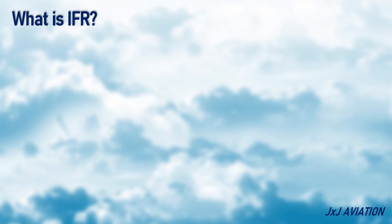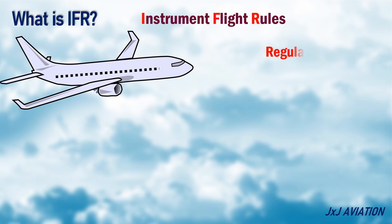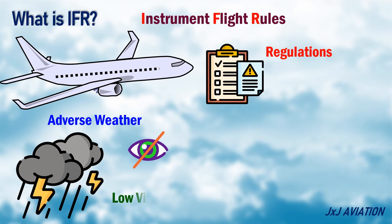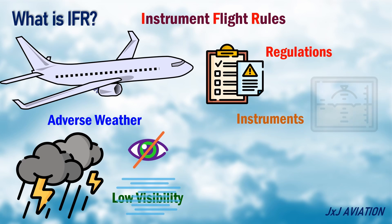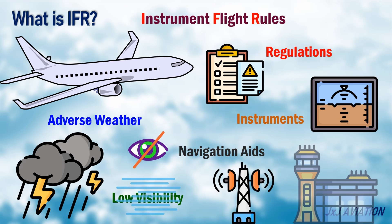First, let's understand what is IFR. IFR stands for Instrument Flight Rules. It is a set of regulations for flight operations where visual flight is not possible, which may be due to adverse weather conditions or low visibility. In IFR, pilots rely on instruments and navigational aids to ensure safe flight, and may also receive instructions from ATC for safe operations.